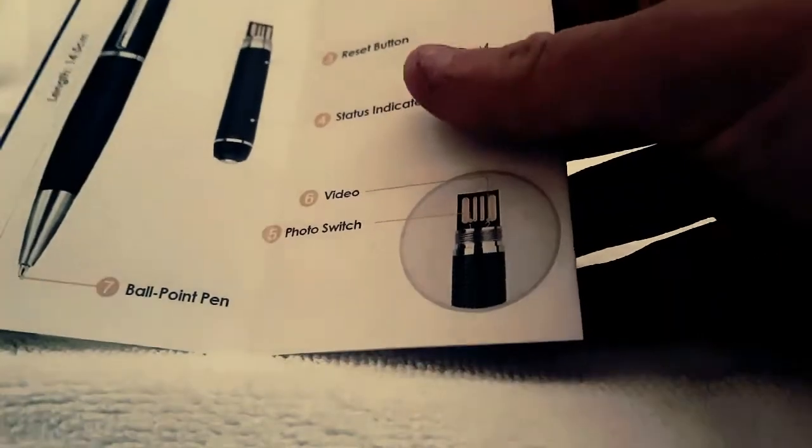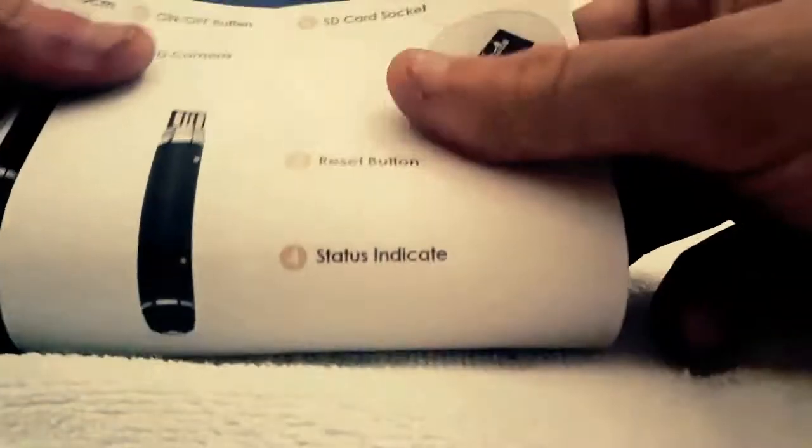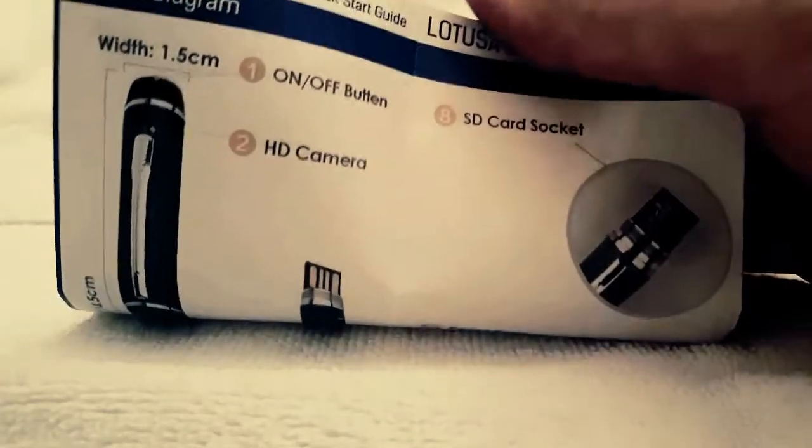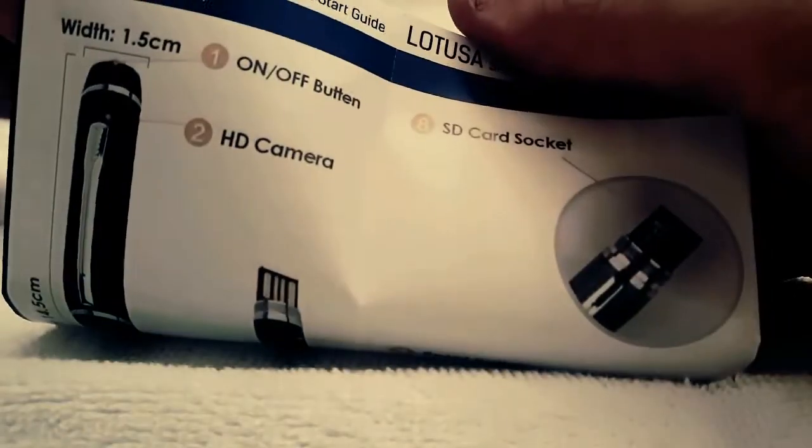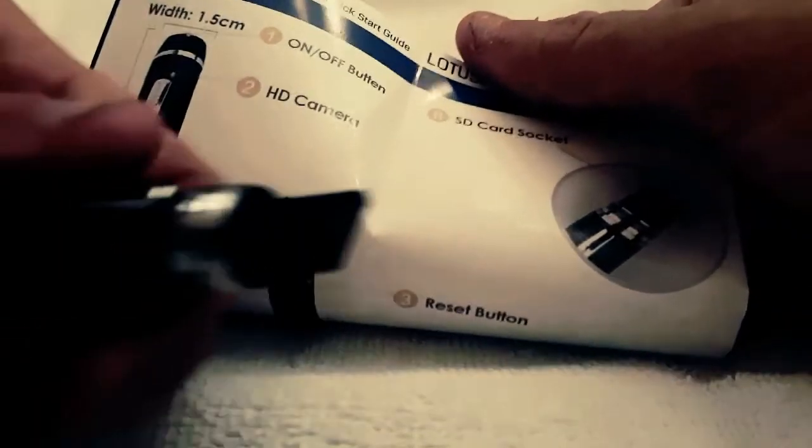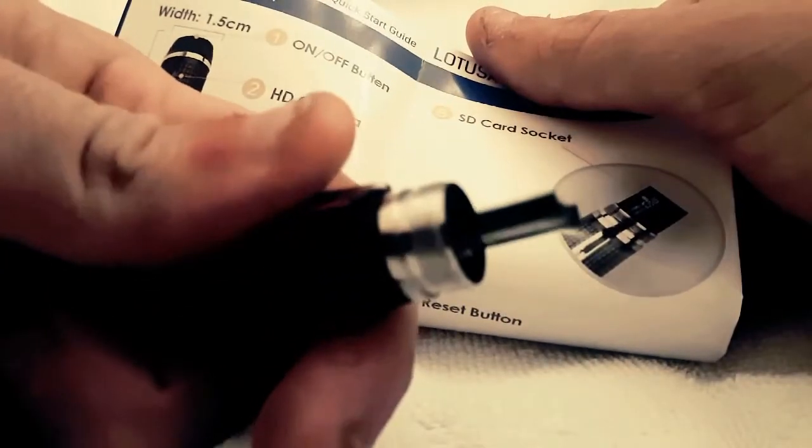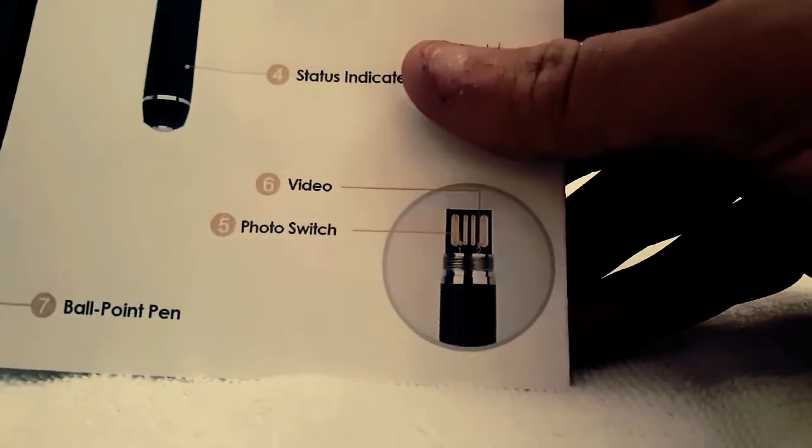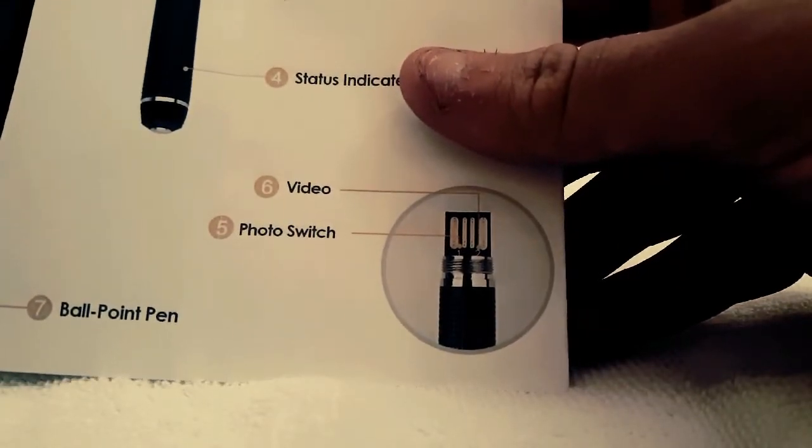So we've got, oh, those are not the microphone. That's a reset button and a status indicator light. On top of it we have the HD camera and the on-off button. This piece right here is going to be our SD card socket on the back side of the USB connection. So your SD card will go right down in the hole there on top. And then that switch changes it from video to photo. Cool.